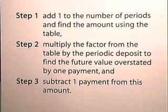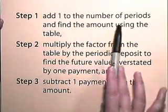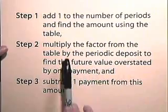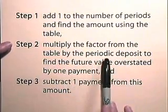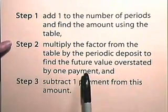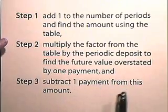To find the amount of an annuity due: step one, add one to the number of periods and find the amount using the table. Step two, multiply the factor from the table by the periodic deposit to find the future value overstated by one payment. And step three, subtract one payment from this amount.